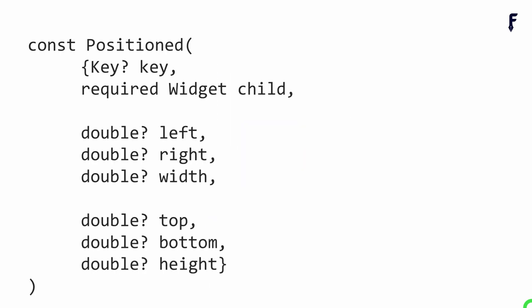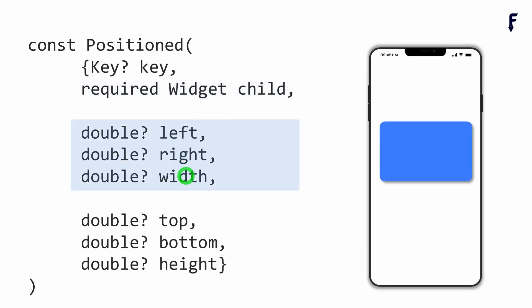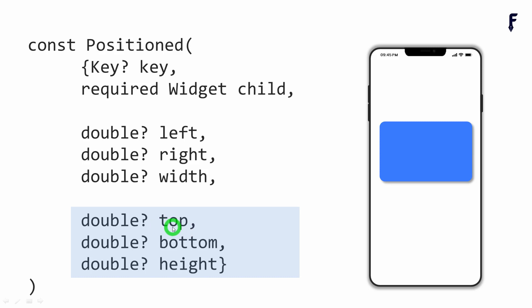Let's look at the properties of the Positioned widget. We have the property called 'child', which is a required property — it requires the widget that has to be positioned inside the Stack. Then we have 'left', 'right', and 'width', which deal with the horizontal axis, and any two of them can be used at a time — we cannot use all three at once. Similarly, we have 'top', 'bottom', and 'height', which deal with the vertical axis, and again any two of them can be used.